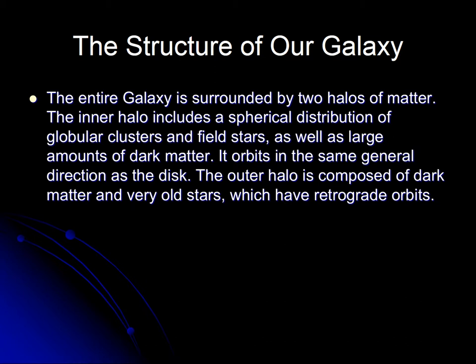The galaxy has two halos of matter. It has an inner halo that contains globular clusters and stars, and the outer halo is composed of dark matter and very old stars — those old stars move in the opposite direction as the stars in the inner halo. The dark matter occupies a halo that is much larger than the rest, engulfing the Milky Way by a great distance.